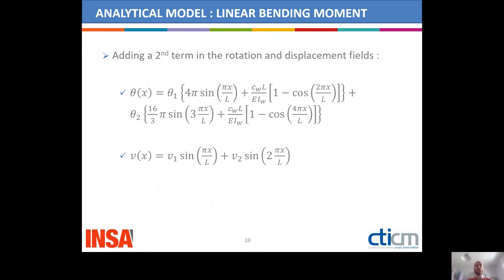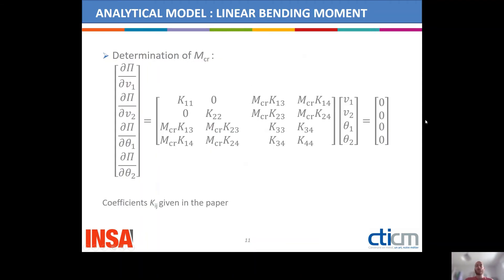In the case of a linear bending moment distribution, we add a second term to the torsional rotation and the lateral displacement. For the torsional rotation, we add the second term, which has more half sine waves, and which complies with the boundary conditions and tends to the exact expression for both free warping and fixed warping cases. Regarding the lateral displacement, we use a second term that corresponds to a whole sine wave. Using these expressions, we again determine the potential energy that we minimize, obtaining a 4×4 matrix for which we assume the determinant is equal to zero, to obtain the minimum value — which is the critical bending moment.